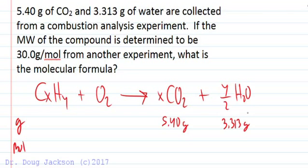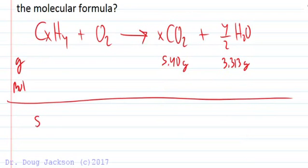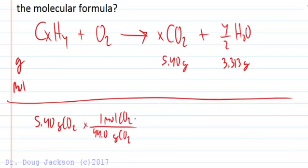Anytime we're doing a stoichiometry problem we've got to convert to moles first. 5.40 grams divided by 44.0 grams per mole. We can write that out in a proper stoichiometry problem here just so we can make sure our units cancel. Grams of CO2 divided by 44.0 grams per mole, one mole of CO2 per 44 grams of CO2.